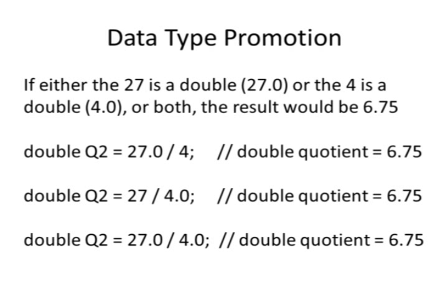Or if I have 27 integer divided by 4.0, the 27 gets promoted to a double. It works the same way as if I had 27.0 divided by 4.0. In each case, the quotient is going to be 6.75.